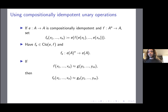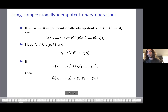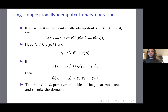There is a very nice property: if I have a height-1 identity f(x₁,...,xₙ) = g(y₁,...,yₙ) and apply this to both f and g to get f_e and g_e, then I get the same height-1 identity. Here x₁,...,xₙ does not mean all variables are distinct — x₁ might equal x₃, for example. So this map that takes a general function f and produces f_e preserves identities of height at most 1 and shrinks the domain.